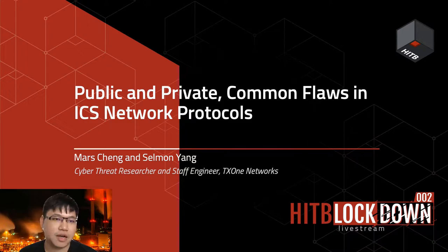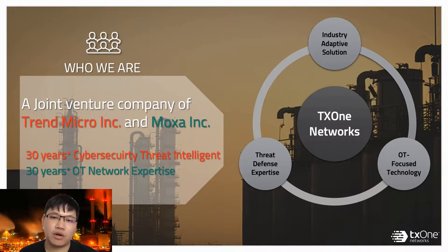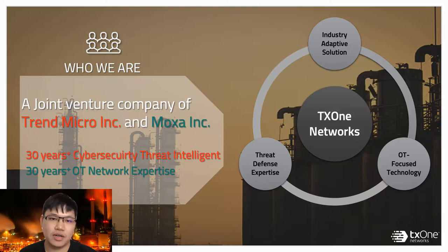I work for TX1 Networks. TX1 is a joint venture company by Tremicro and Mosa. We focus on providing cyber defense and visibility for operational technology networks. Tremicro has 30 years of security knowledge and high-speed DPI technology and is a world leader in threat research, while Mosa has 31 years of OT knowledge in ICS infrastructure and protocols. We combine the cybersecurity and OT knowledge — that is TX1.